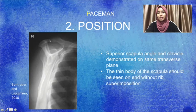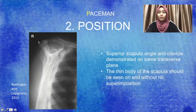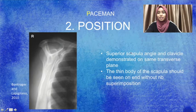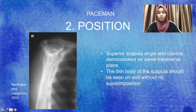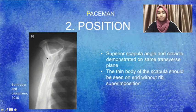This is the image I am going to evaluate. The position is correct because the superior scapular angle and clavicle are demonstrated on the same transverse plane — this is the superior scapular angle and this is the clavicle, on the same transverse plane. The thin body of the scapula is seen without rib superimposition — this is the scapular body and these are the ribs, and there is no superimposition.